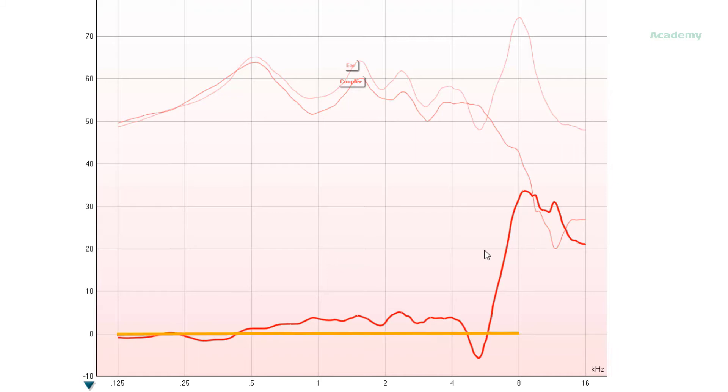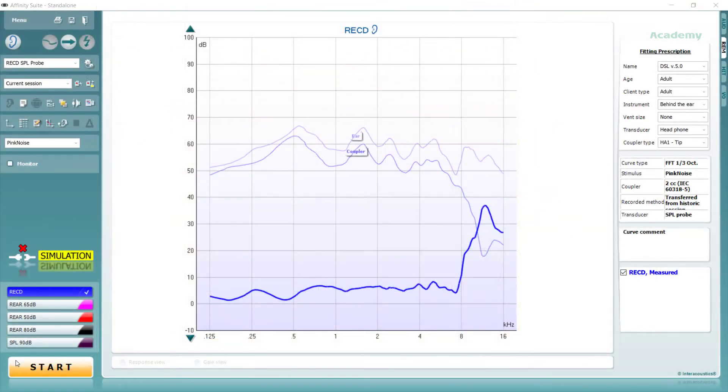A good RECD should be above zero, largely positive, focusing on the area up to 8 kHz. It is also possible to compare the RECD against predicted RECD data, which is based on average measurements across a larger number of patients.